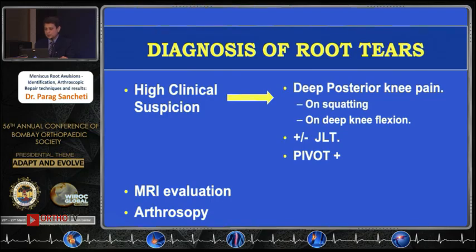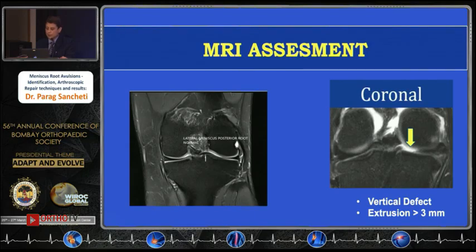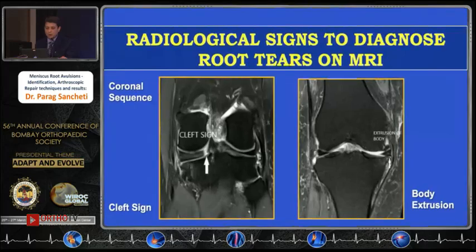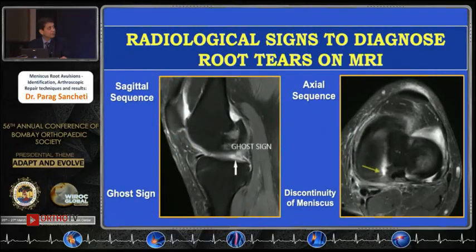MRI evaluation is something which will clinch the diagnosis. On MRI, this is how a normal root is seen, and you have to look for extrusion — sometimes it is seen more than 3 millimeters — along with a vertical defect. Also look for the cleft sign, which is very pathognomonic of a root tear, and another sign is the missing meniscus posteriorly, the ghost sign, which is also seen on the axial sequence.